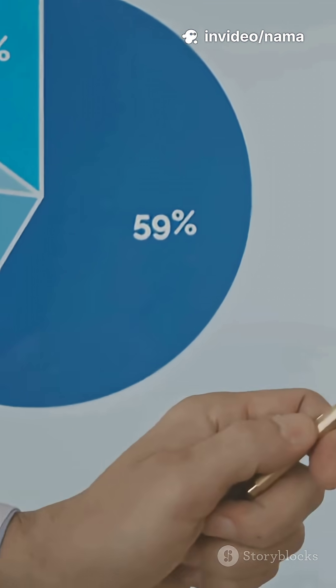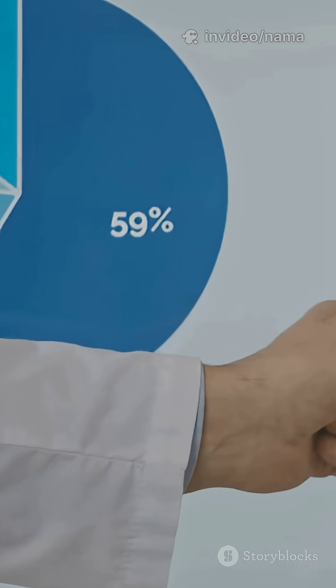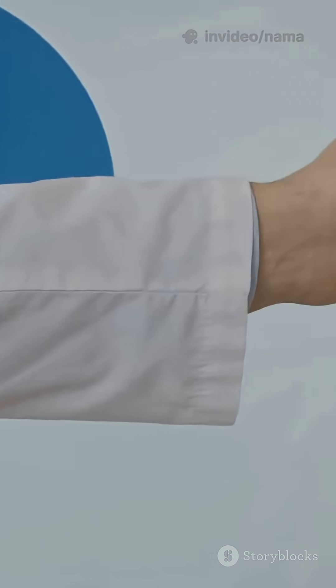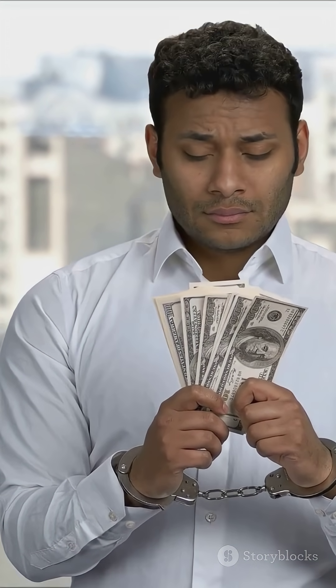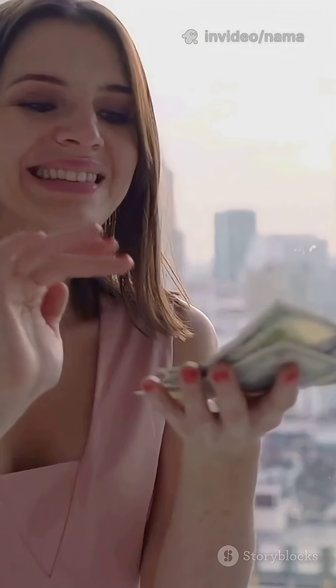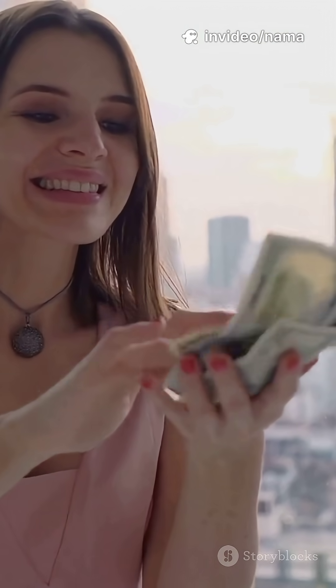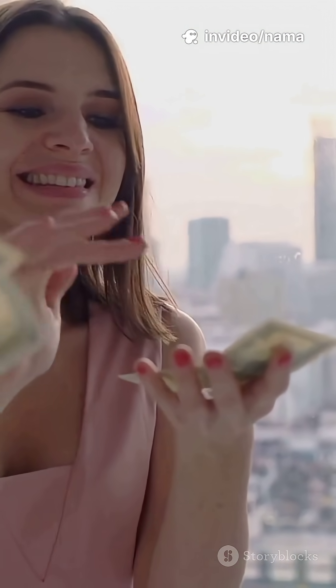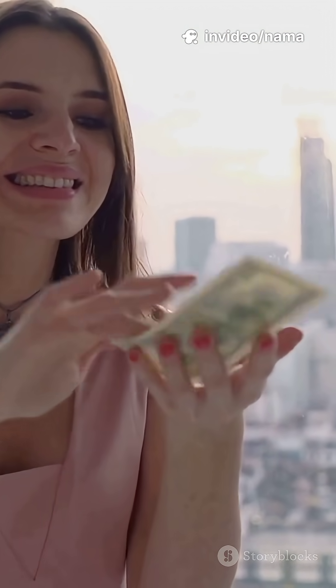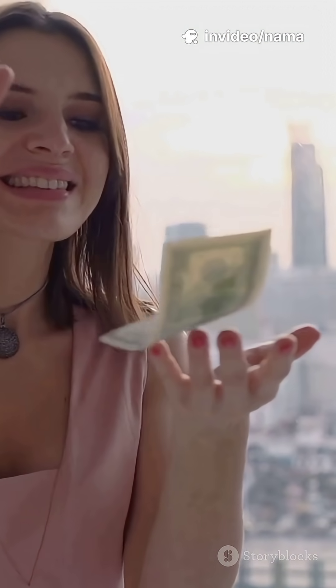Second, the income share of the top percent. Economists often look at how much of a country's income or wealth is taken by the top 1% or the top 10%. For instance, if the top 1% owns 40% of all wealth, it shows a very unequal society.